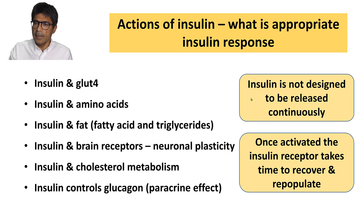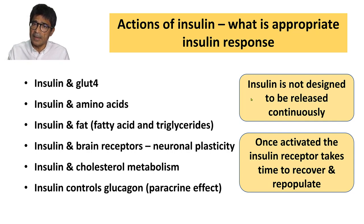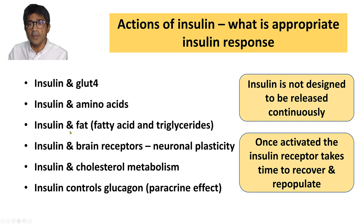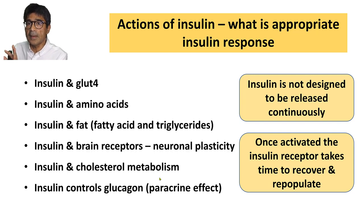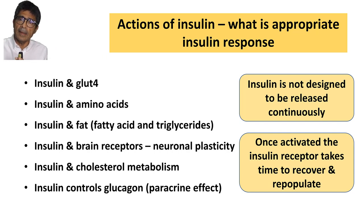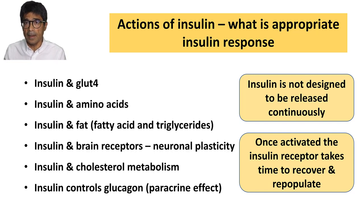To summarize: insulin signaling takes sugar into the cells through GLUT4, takes amino acids and builds new protein, it's very important to clear fat from the circulation and pack it into the fat cells, it's important for brain function through insulin receptors for synaptic plasticity, and insulin is crucially important in cholesterol metabolism. This is a nice segue to explain that there is paracrinology between insulin and glucagon. What does that mean? Let me explore that with you.